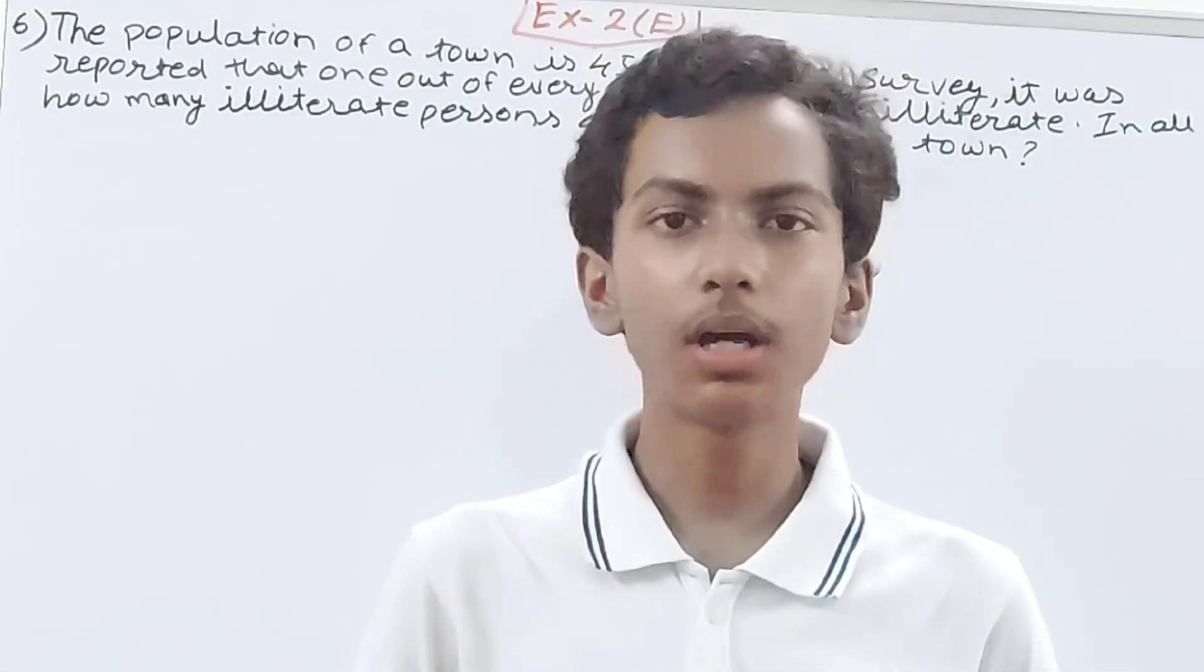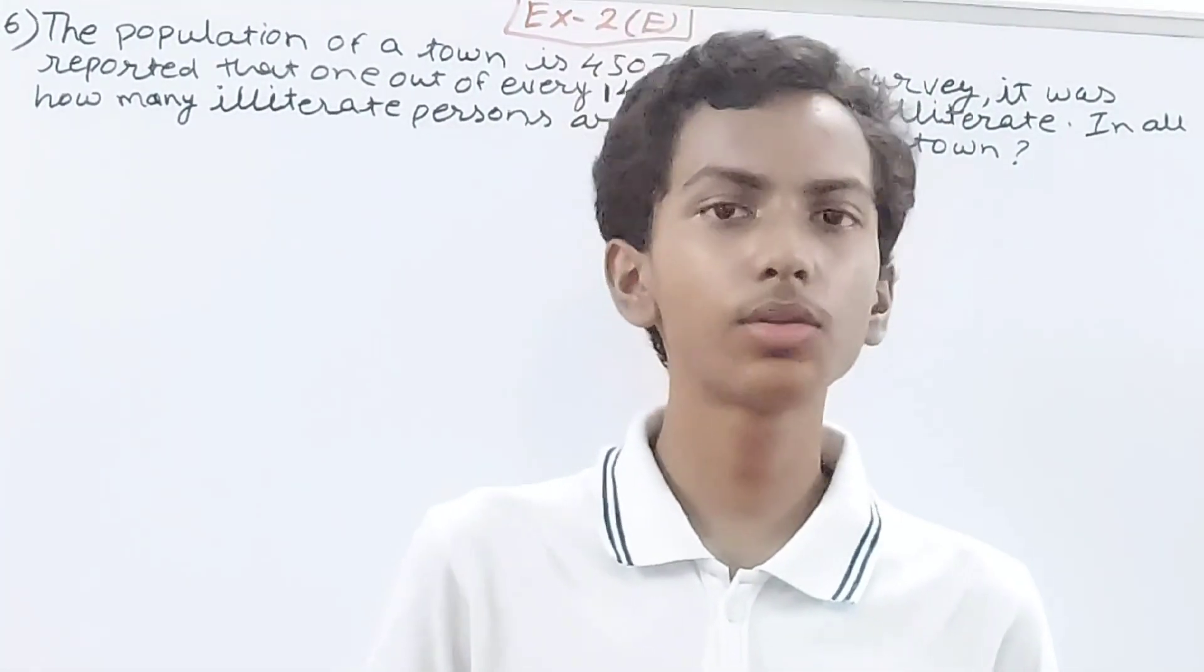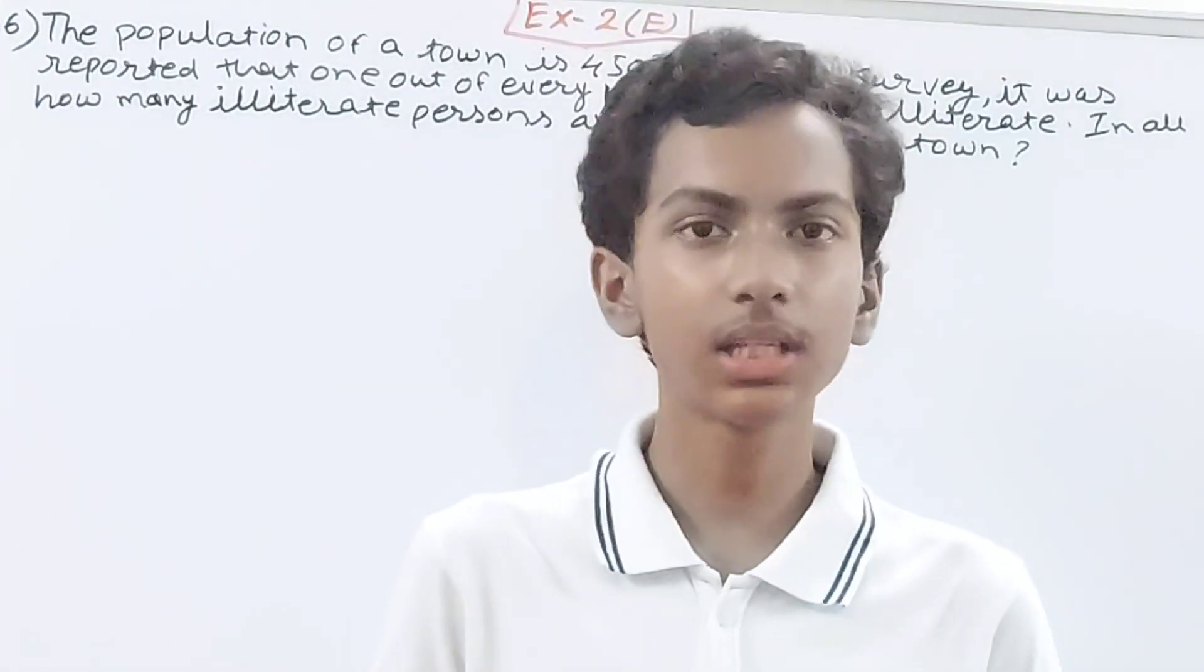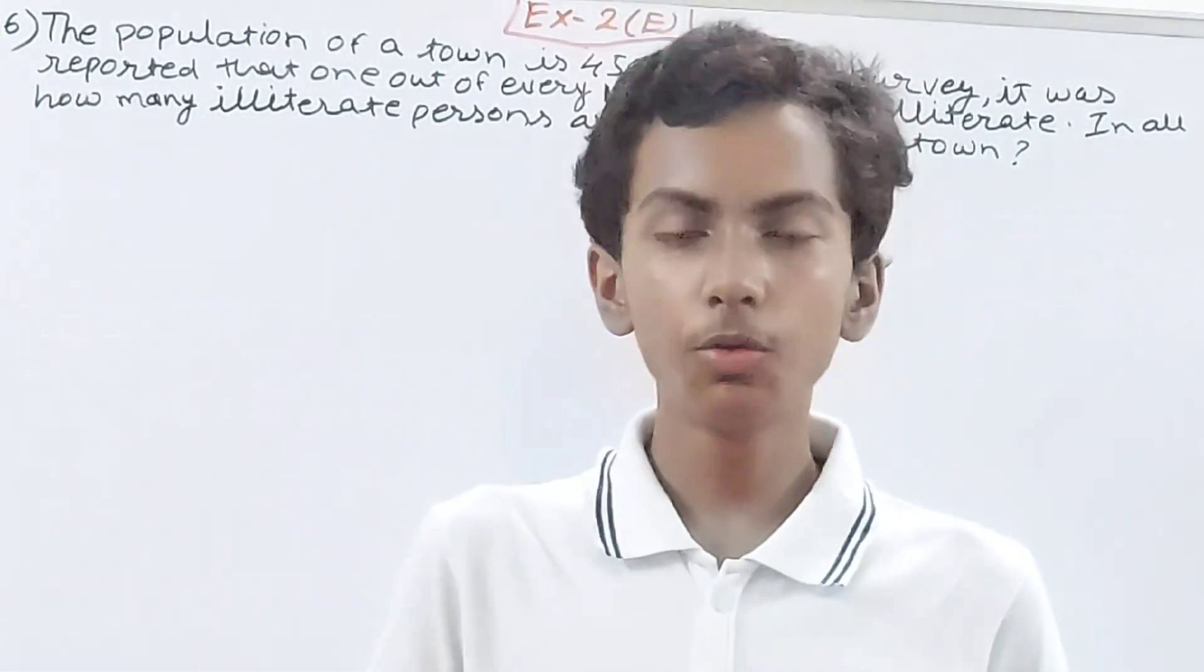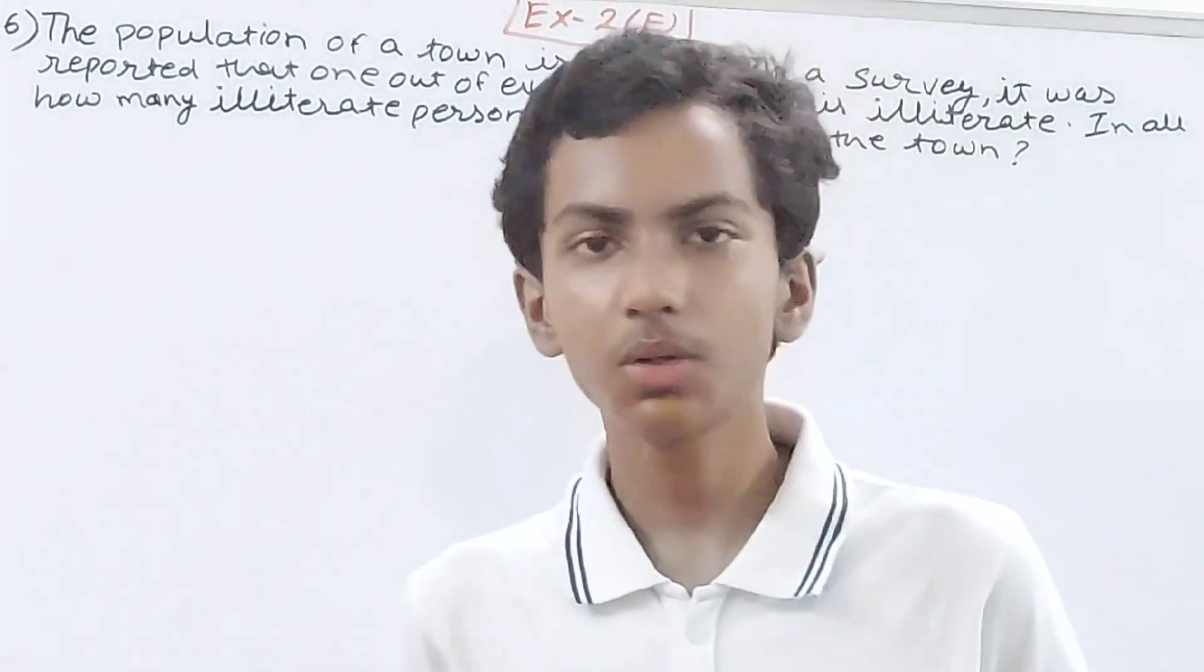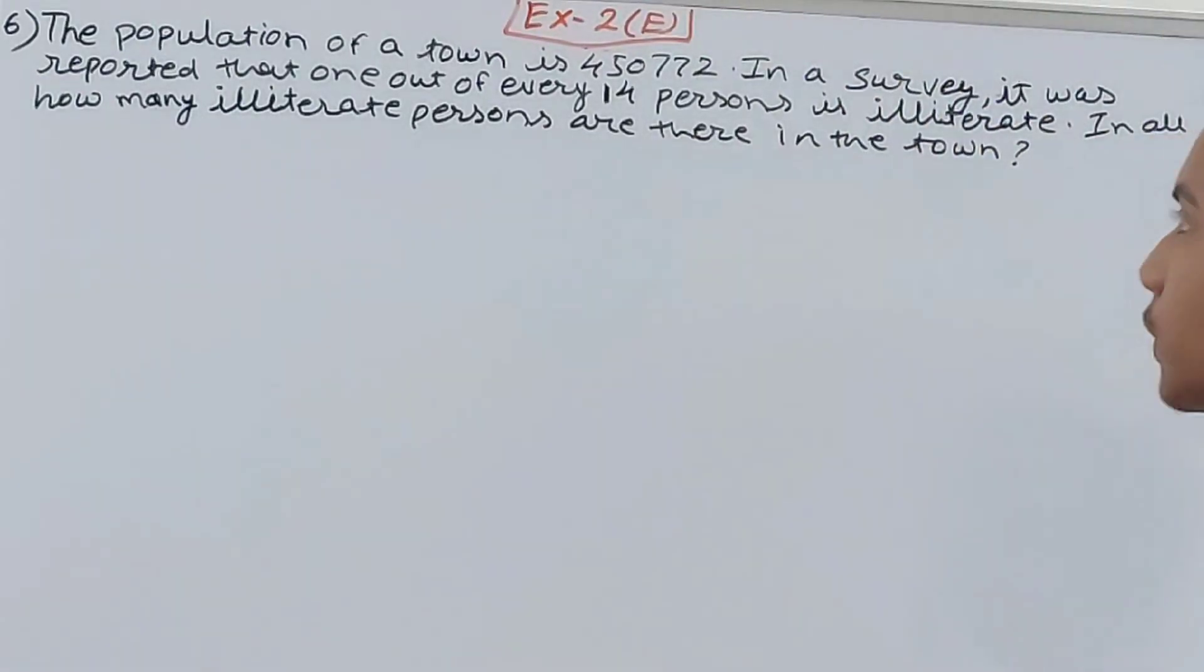Hello friends, welcome back to my YouTube channel Local Learning. In this video we are going to solve ICAC Mathematics Class 6th, Chapter 2, Whole Numbers, Exercise 2, Question Number 6. The population of a town is four lakh fifty thousand seven hundred and seventy-two. In a survey it was reported that one out of every fourteen persons is illiterate.